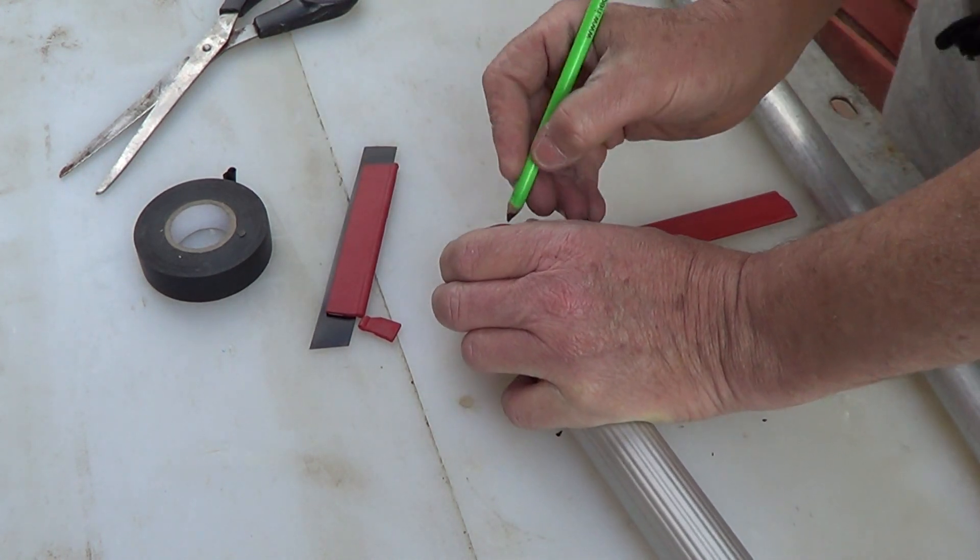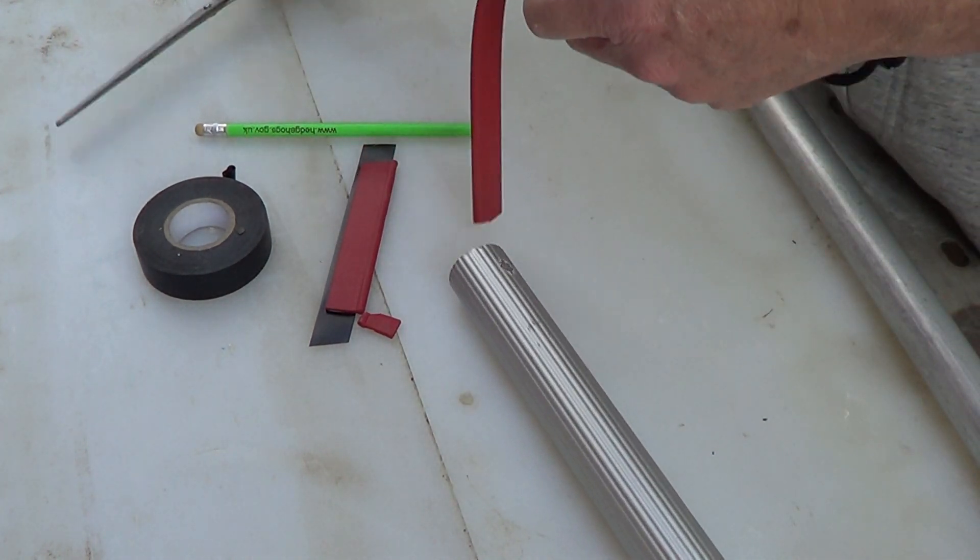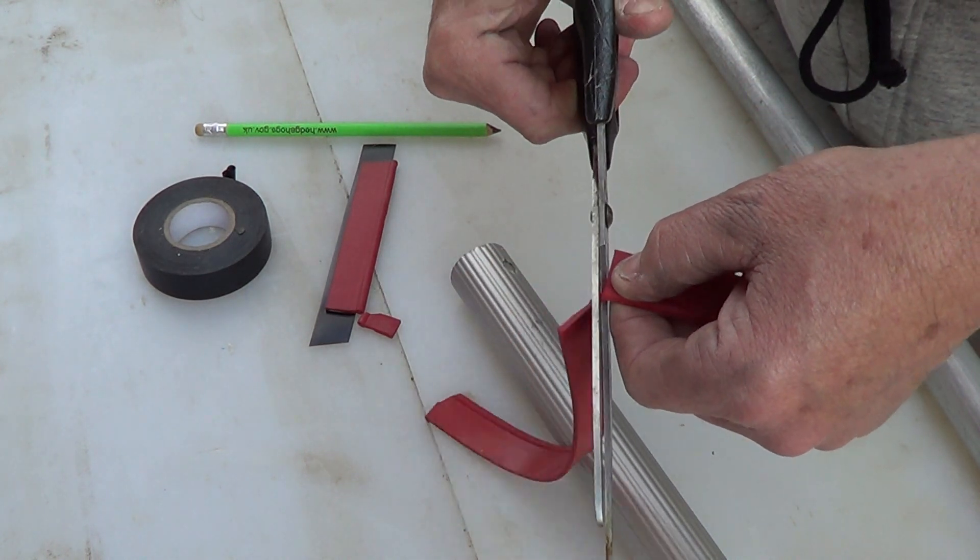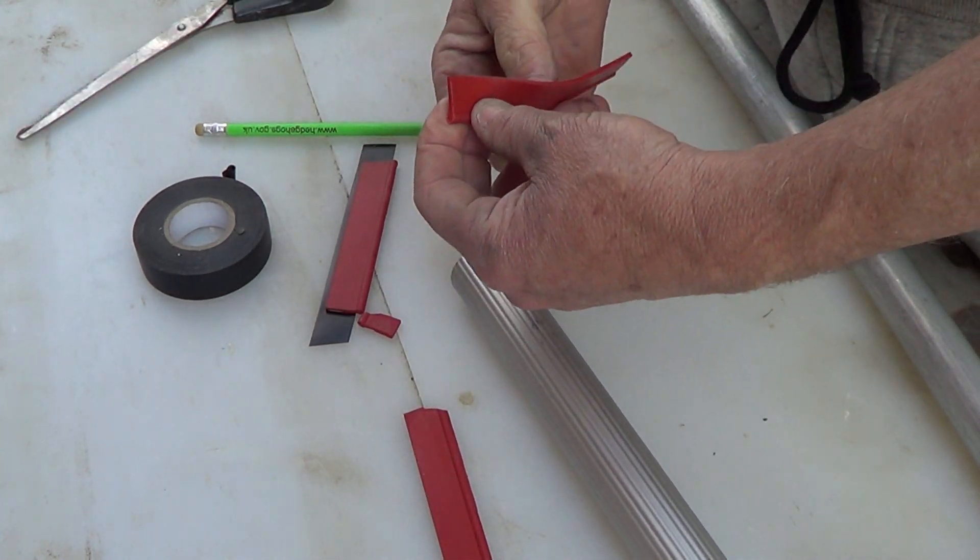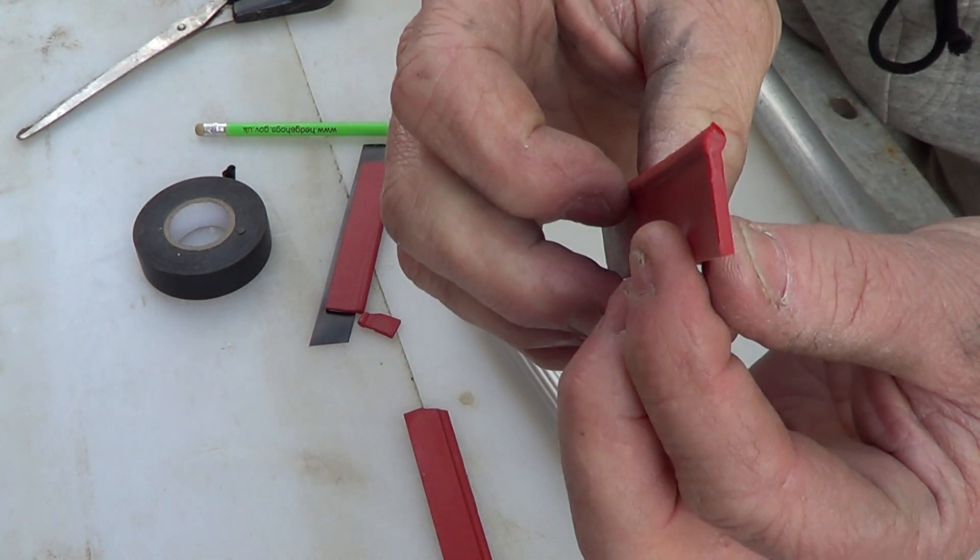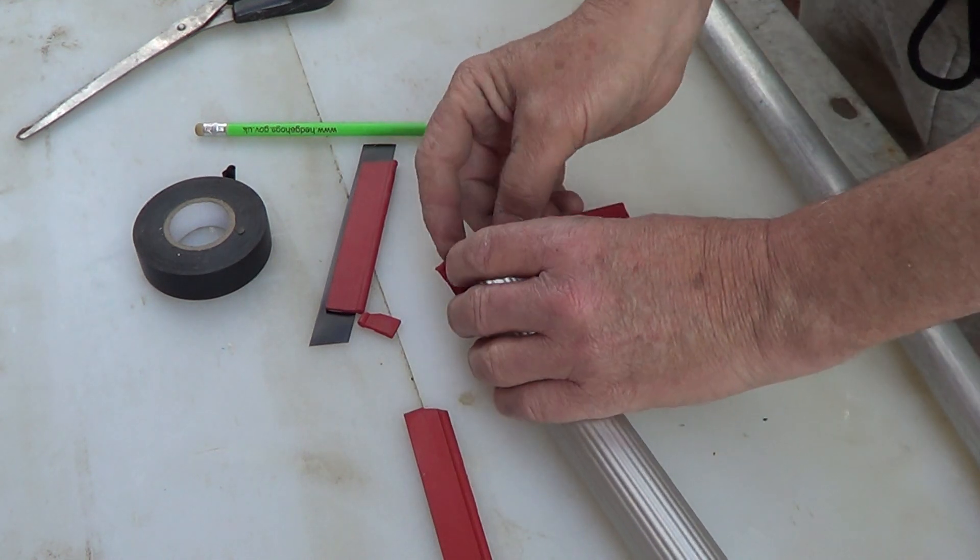Mark off the circumference of the pole, cut it again so it fits. You see the rubber there? It's got the rounded bit there, that's what you want at the bottom of the pole. Put that bottom slightly proud of the end.